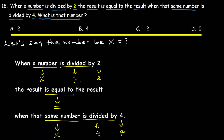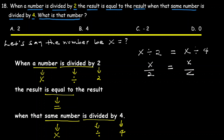So the word sentence translates to the algebraic equation: x divided by 2 equals x divided by 4. That is, x over 2 equals x over 4. This is a linear equation in one variable.